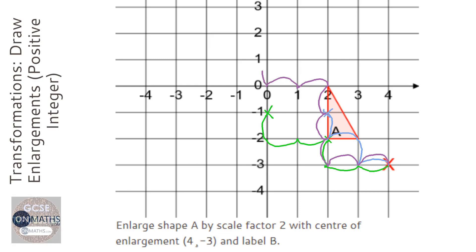And then I'm going to join it up to get my new shape. Join up all three points, and it says label it B.